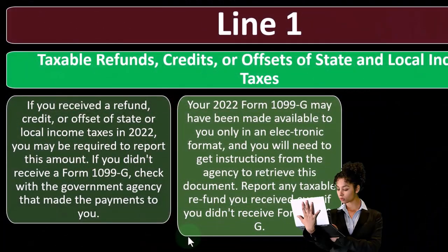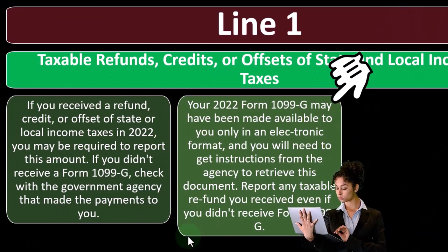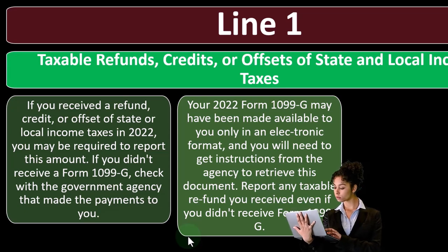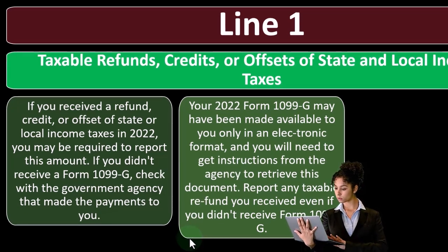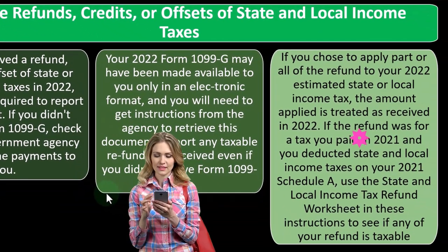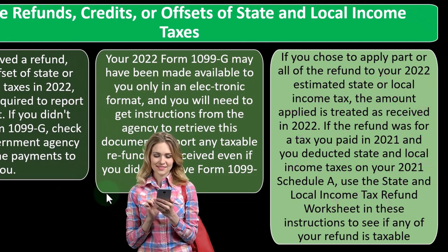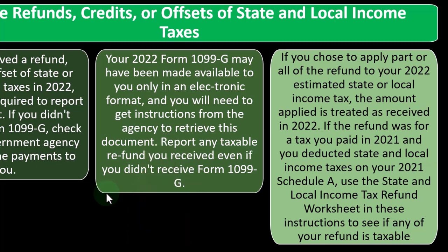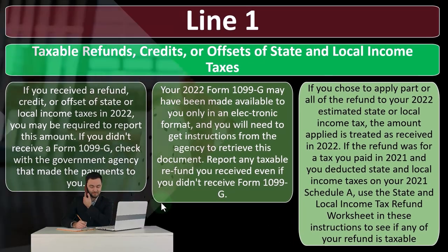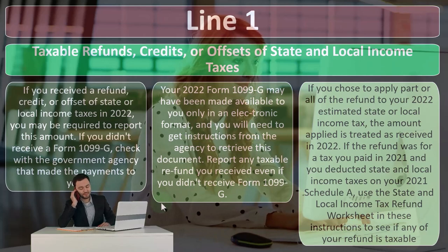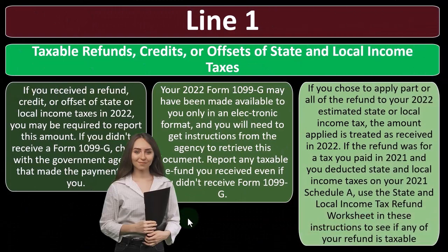Your 2022 Form 1099-G may have been made available to you only in an electronic format, and you will need to get instructions from the agency to retrieve this document. Report any taxable refund you received even if you don't receive a Form 1099-G. Like all 1099s, if you have income and you didn't get the document, you still should record it. If it has been generated, the IRS will have it — so if you put something different on your form than what the IRS has, it's going to cause you problems.